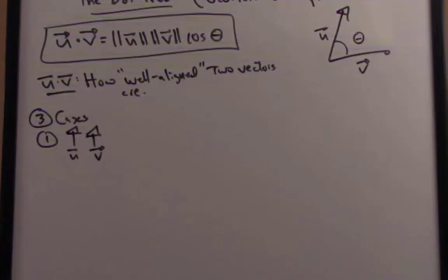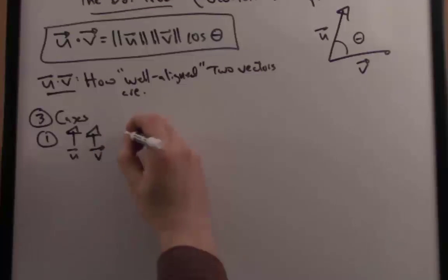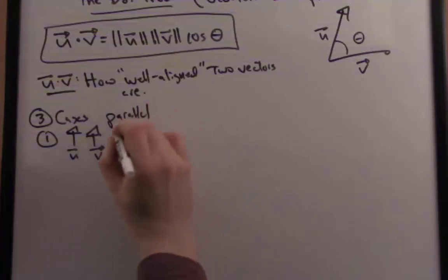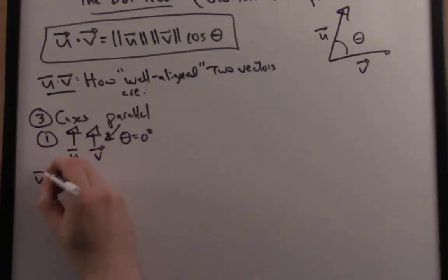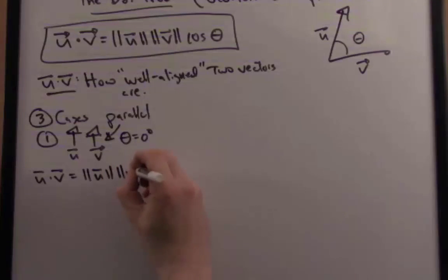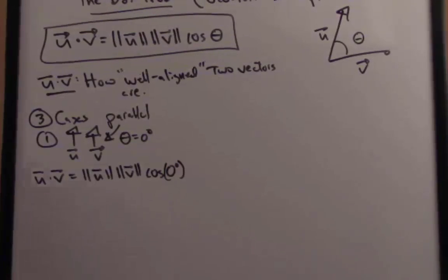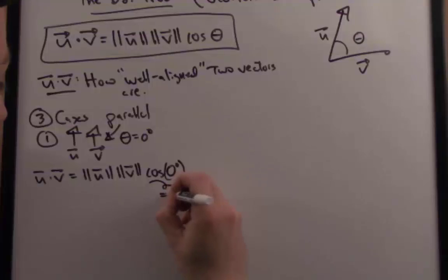That's about as well aligned as two vectors could be. In that case, the angle between the two vectors is zero degrees if they're totally parallel. Let's see what the implication is with our identity from above. So u dotted with v is the norm of u times the norm of v times cosine of zero degrees. Now cosine of zero degrees from trigonometry is one.